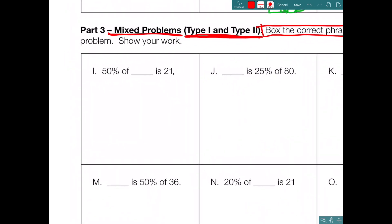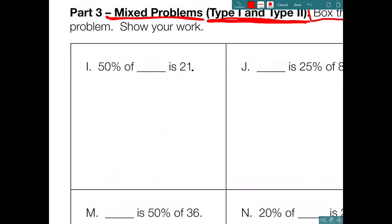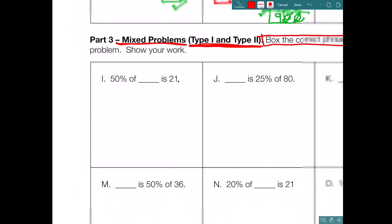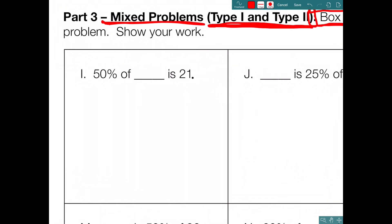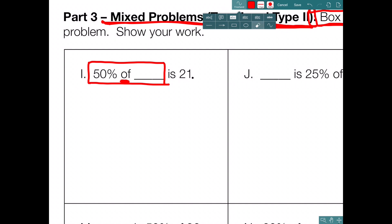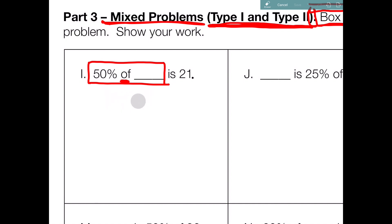The first problem in part 3 is box I: '50% of blank is 21.' Box the correct phrase — put a box around '50% of blank.' Notice 'of' is in the middle. This is a type 1 problem because I don't know what two numbers to multiply: one is 50%, but the other is unknown. That's why I cannot just multiply to get the correct answer.